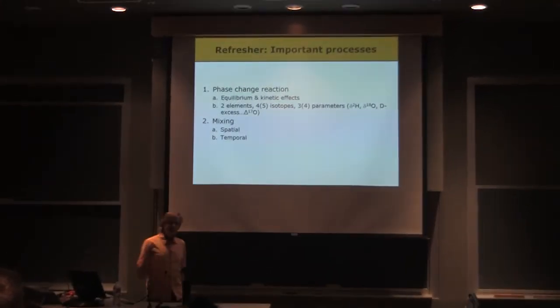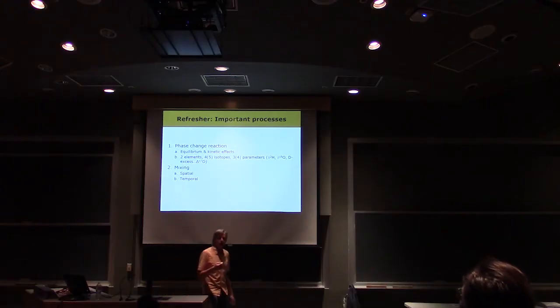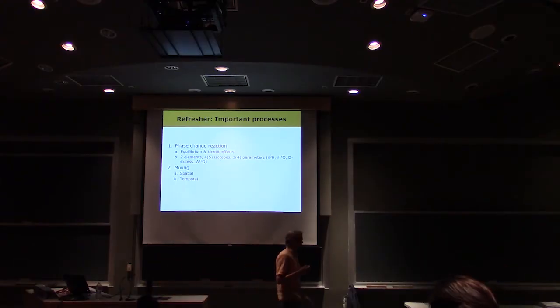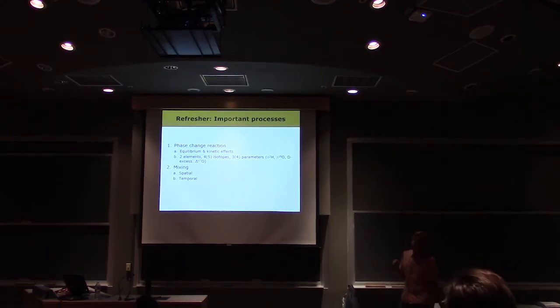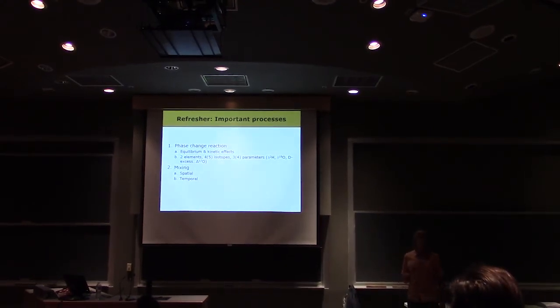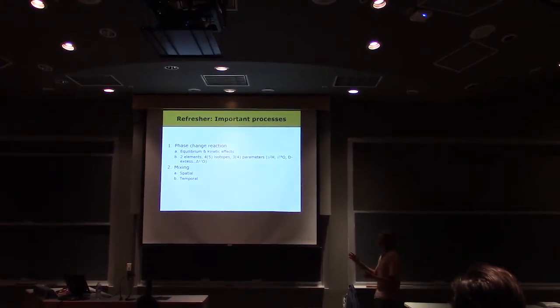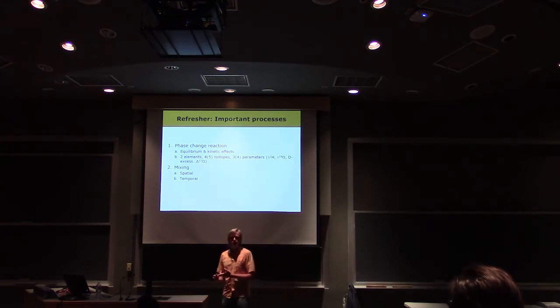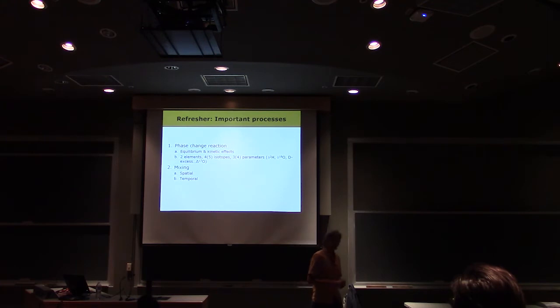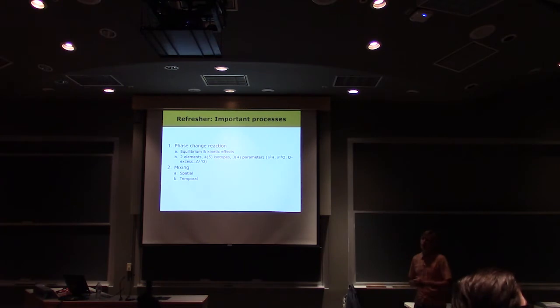We're going to be dealing with two elements, H2O. We've got H's and we've got O's, and we can look at and take advantage of both elements. We have traditionally four isotopes that we think of, protium and deuterium, stable isotopes, and then oxygen-16 and oxygen-18. I think you'll probably hear a little bit about oxygen-17 at some point. I'm going to ignore it. Traditionally we've ignored it, but O17 is kind of coming on the scene, and that provides another tracer.